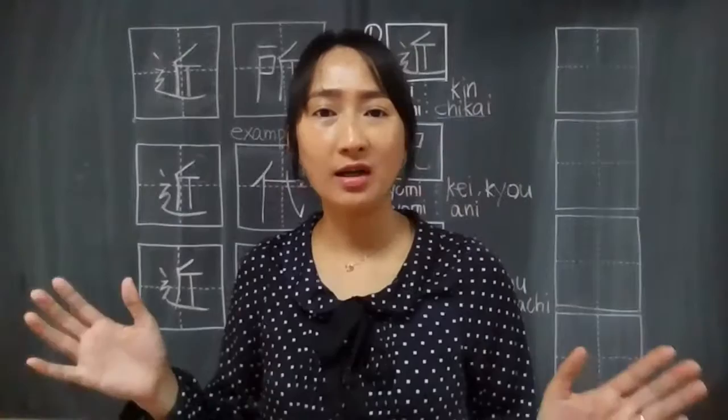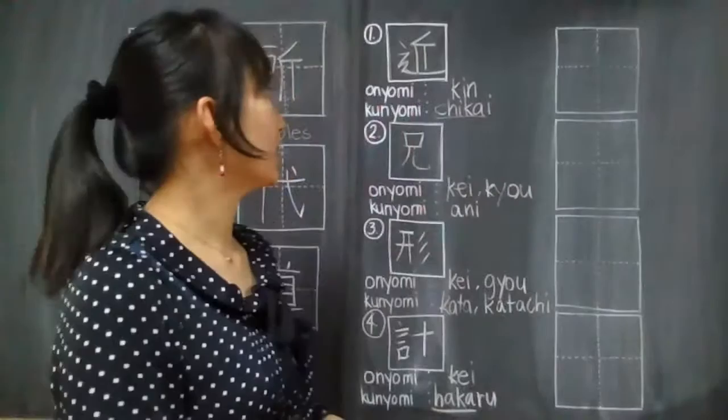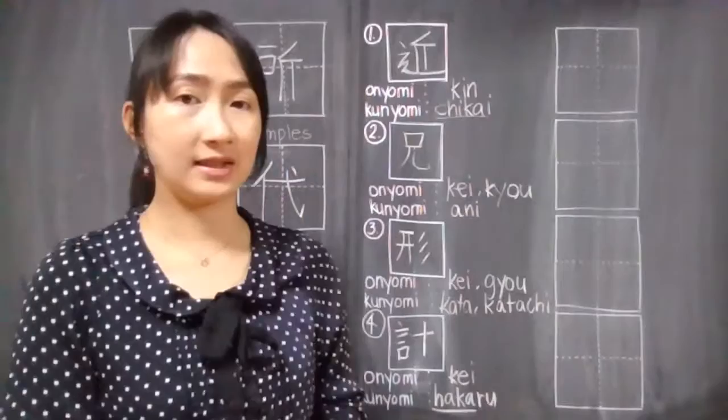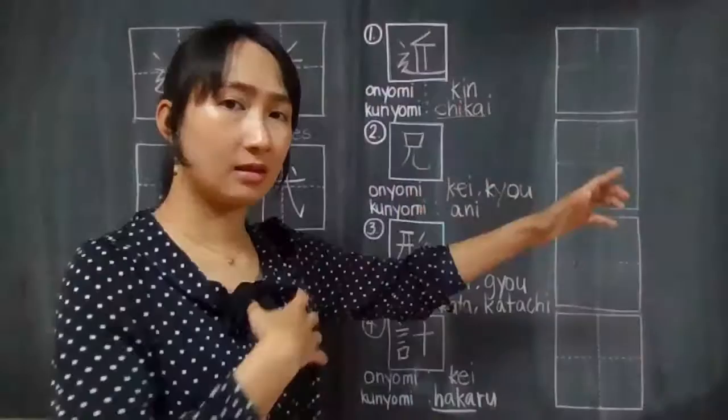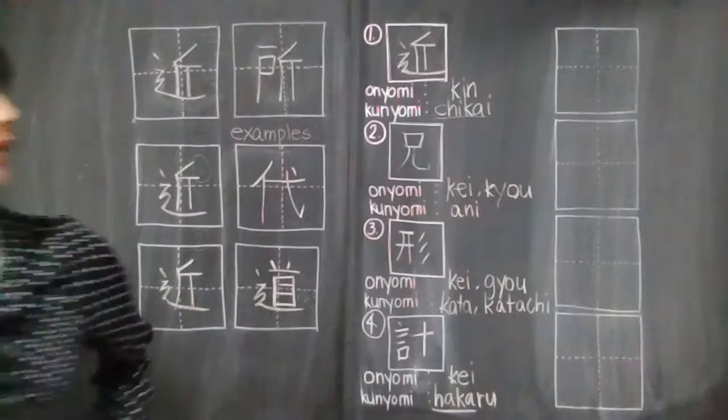Hey guys, we are live again. Today I'm going to share with you another four sets of kanji characters. So let's start. This kanji's onyomi is kin and its kunyomi is chikai. Chikai means near.